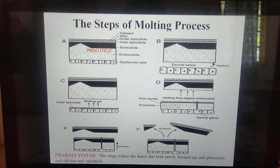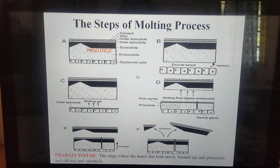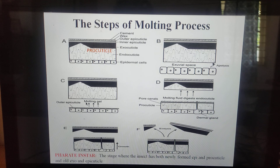The next step is apolysis — the detachment of the cuticle from the epidermis. After separation of the cuticle, an empty space called the subcuticular space develops. Into this subcuticular space, the molting gel, which is rich in chitinase and protease, is secreted. After this, the outer epicuticular layer is formed on the epidermis.